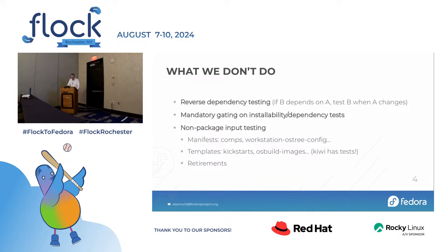Why are these things important? We need reverse dependency testing to find out if A breaks B when A changes — ideally, don't change A until B is fixed. Without it, we only find out when we try to use B and discover it's broken. Mandatory gating — testing without gating is pretty useless. We worked that out in the last 10-15 years. When I started at Red Hat in 2009, we thought automated testing was a great idea, and then painfully learned that tests are no use if the results don't mean anything. And non-package input testing: if we merge it and the compose breaks, that's bad. We don't want that.